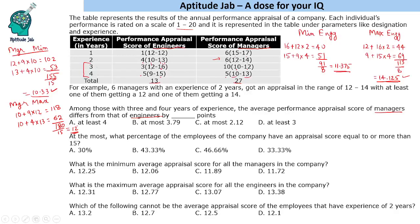For the maximum difference, the maximum possible for engineers is 14.125 and the minimum for managers is 10.33. So 14.12 minus 10.33 gives approximately 3.79. So if engineers have the maximum appraisal and managers have the minimum, the difference can be 3.79.